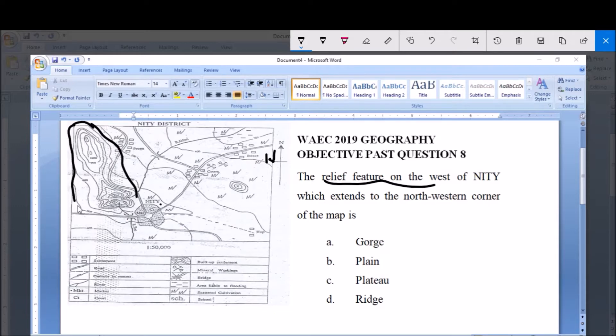So this relief feature around here is what we are asked to consider. We are asked what it is. Option a, gorge. Now a gorge basically is a steep sided valley and it's usually represented by v-shaped, closely packed v-shaped contour lines. So that does not fit